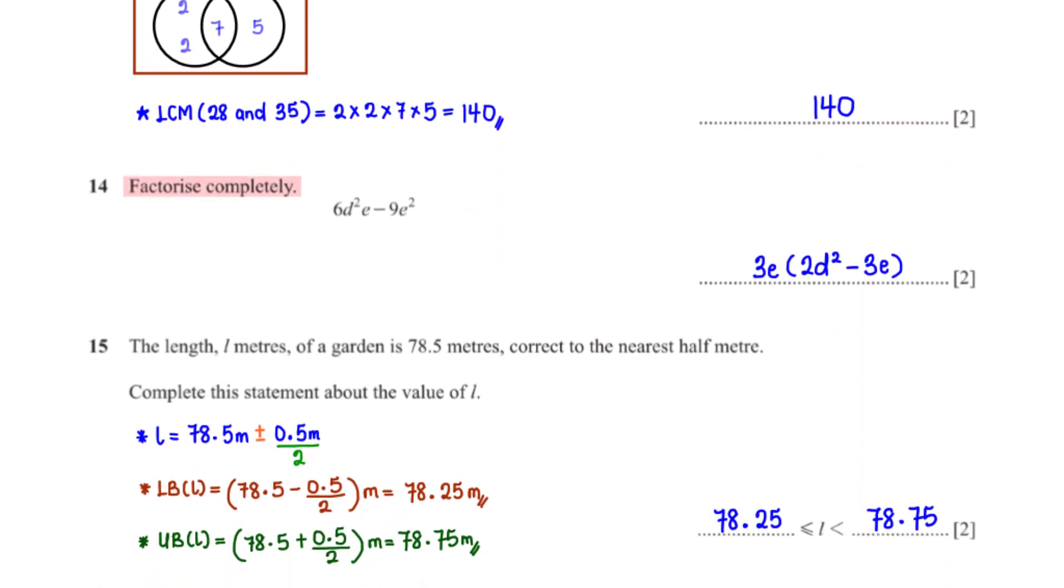Factorize completely 6d squared e minus 9e squared. The terms have a common factor of 3e. When we factor out 3e, we are left with 2d squared minus 3e.